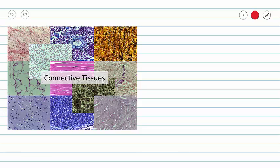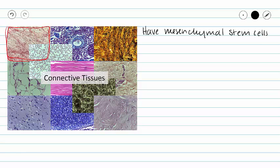This series of videos is going to cover connective tissues, and this video in particular is going to cover areolar loose connective tissue proper. Before we can describe areolar tissue we need to learn some basics about connective tissues. Connective tissues all have a common origin, and their stem cells are called mesenchymal stem cells. These mesenchymal stem cells can become any type of connective tissue, which makes connective tissue special and really cool.